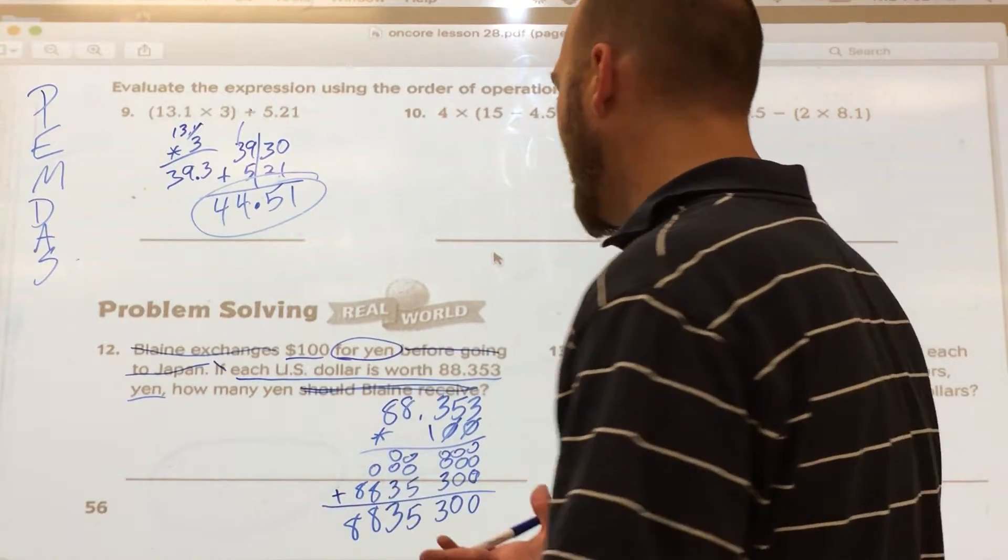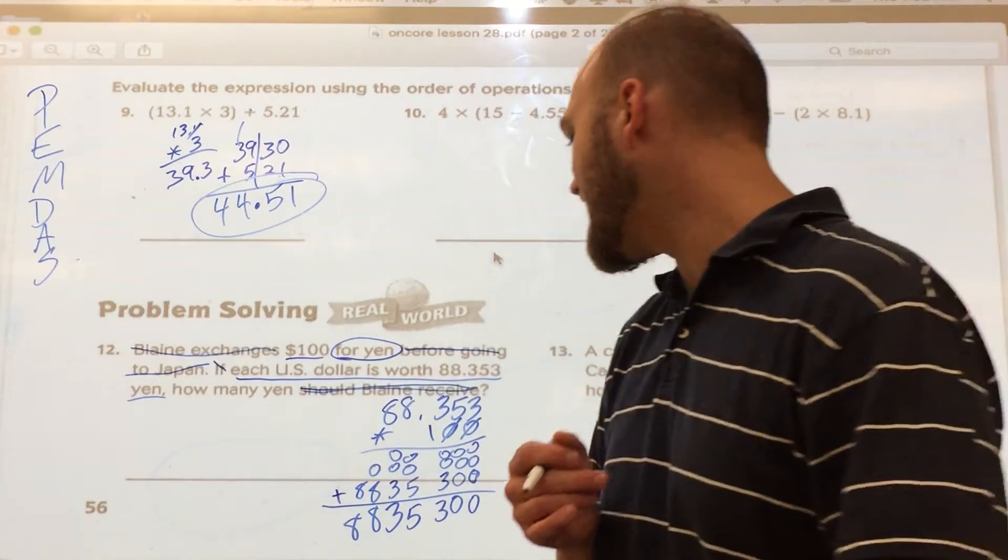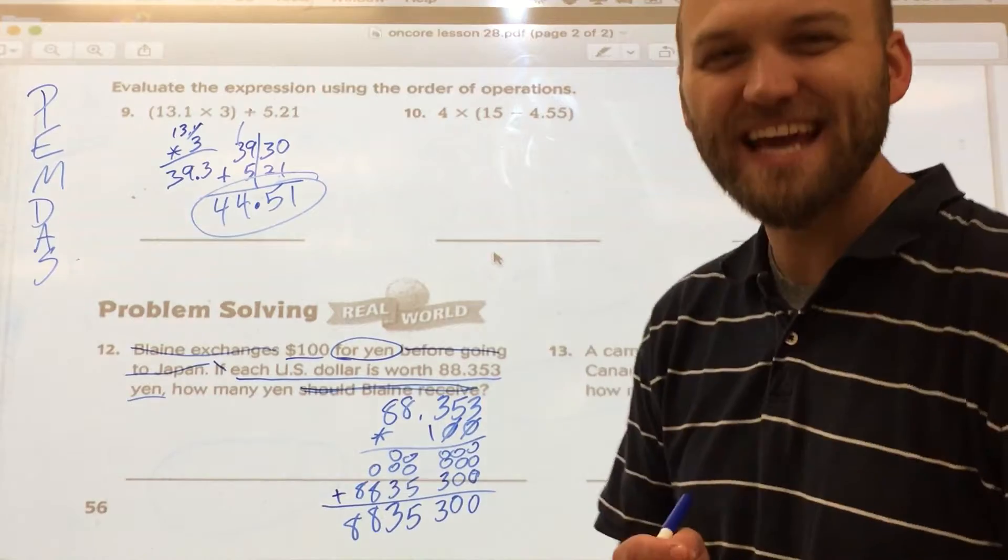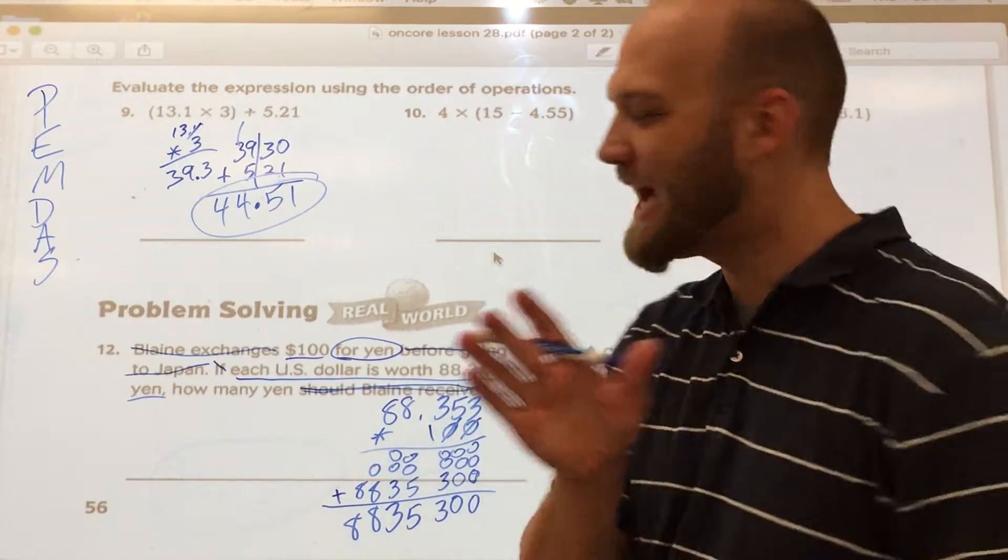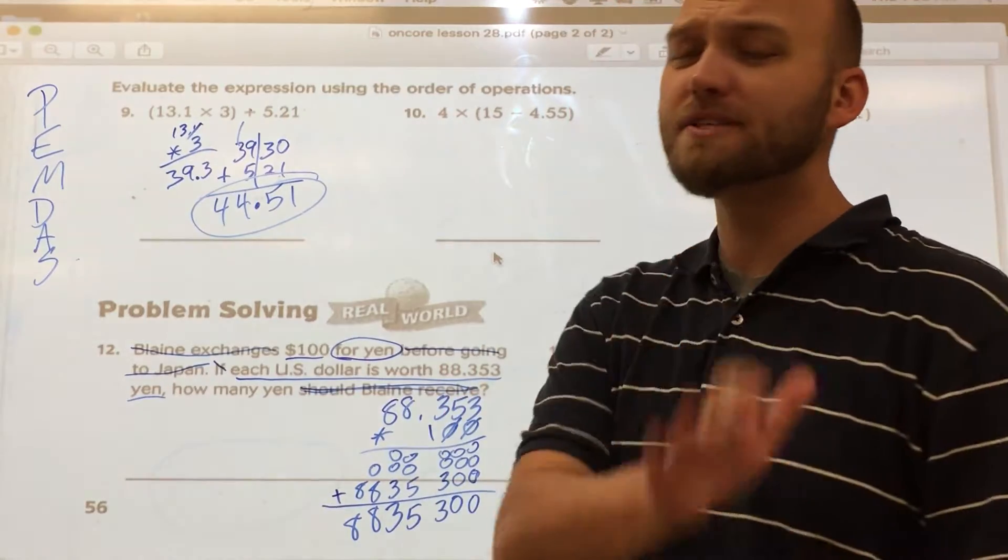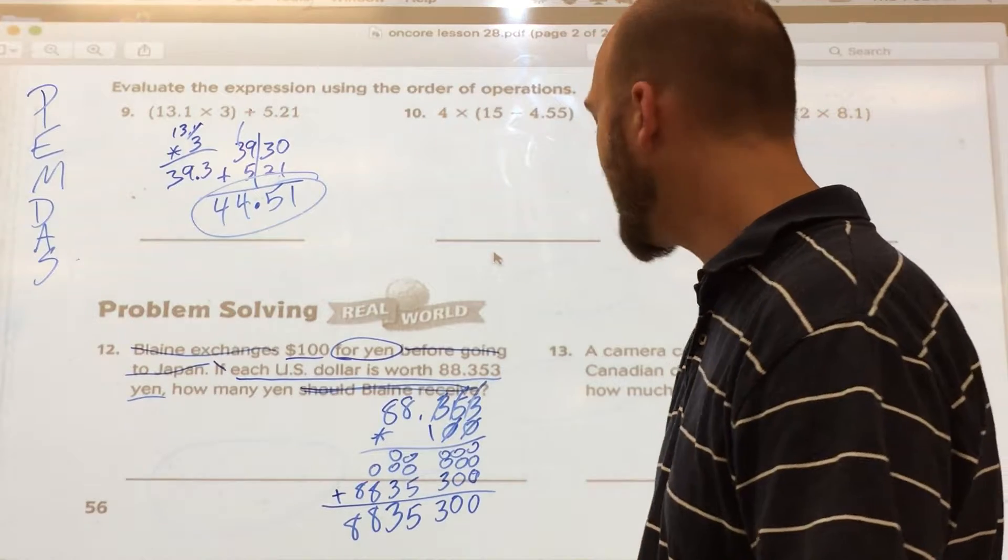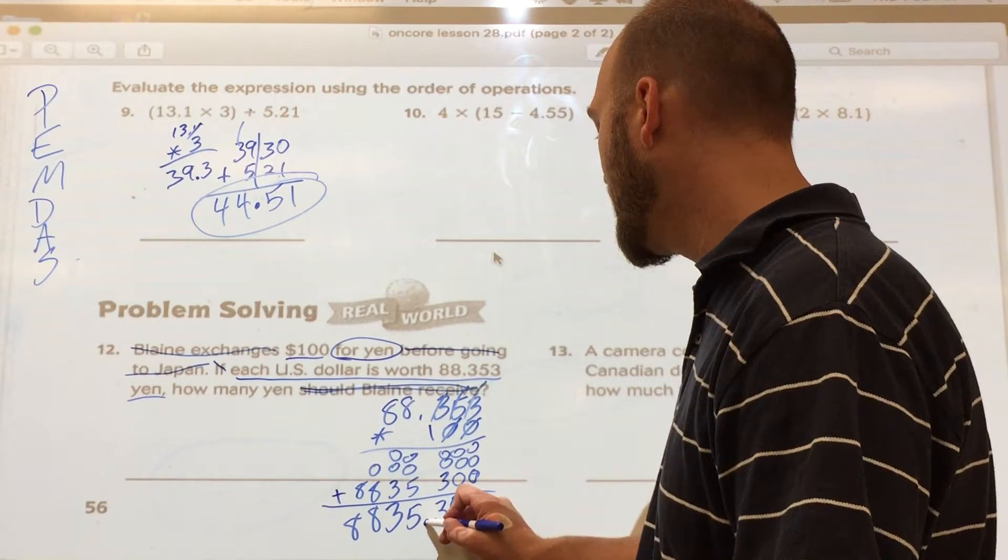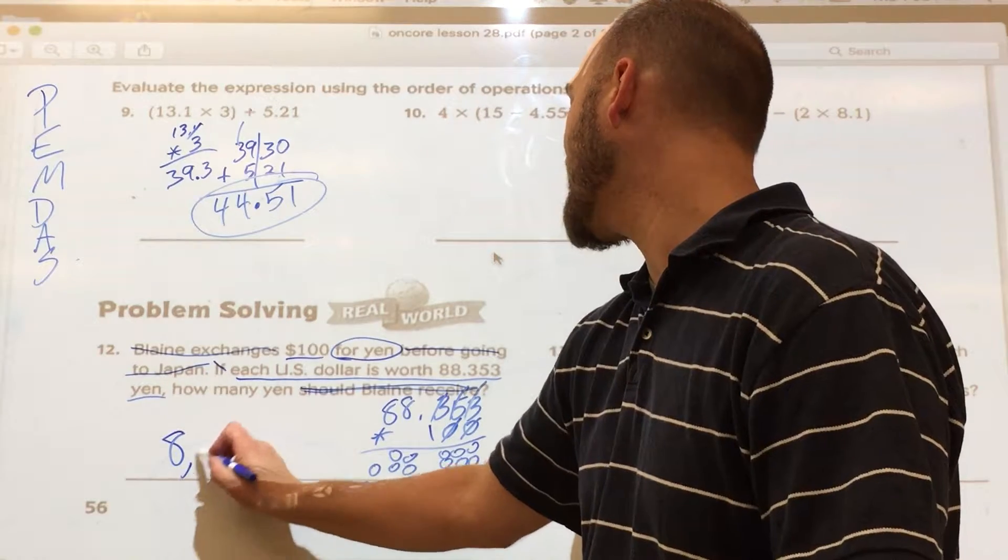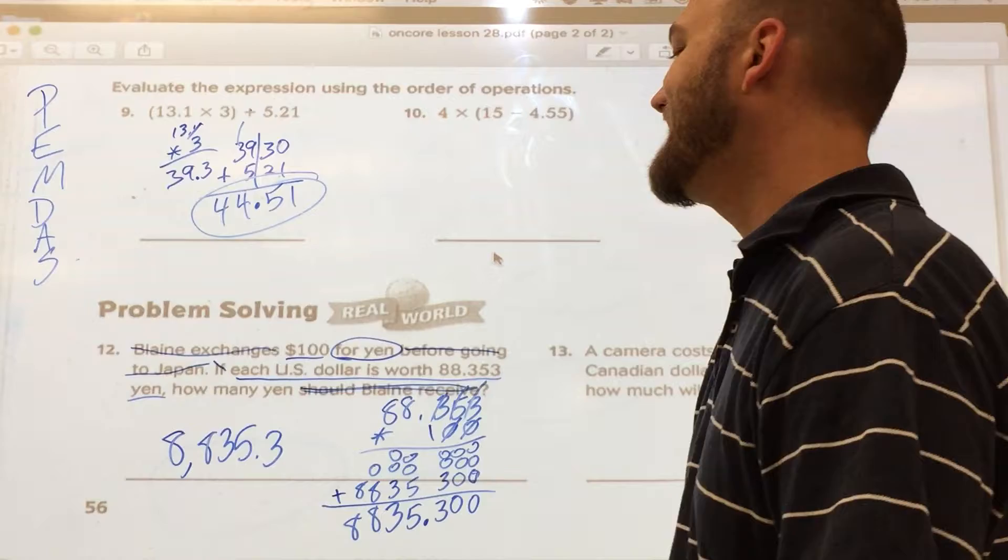Now, do I have $100 and that would then be equal to 8,835,300 yen? No. Not. It's still an impressive number, but not that big. So how many digits to the right of a decimal do I have in my problem? 1, 2, 3. So how many will I have in my answer? 1, 2, 3. He is going to get 8,835.3 yen.